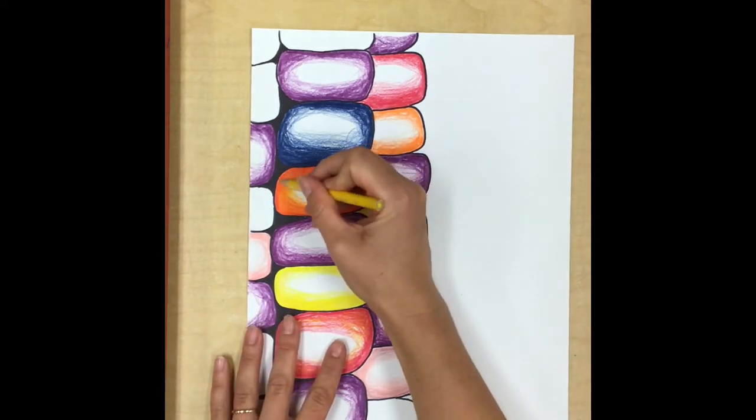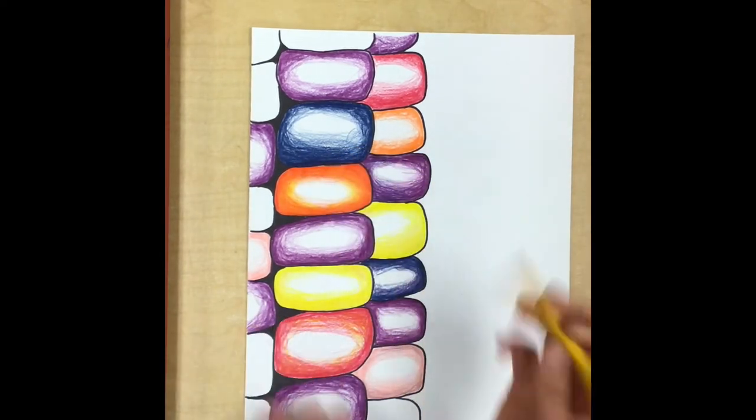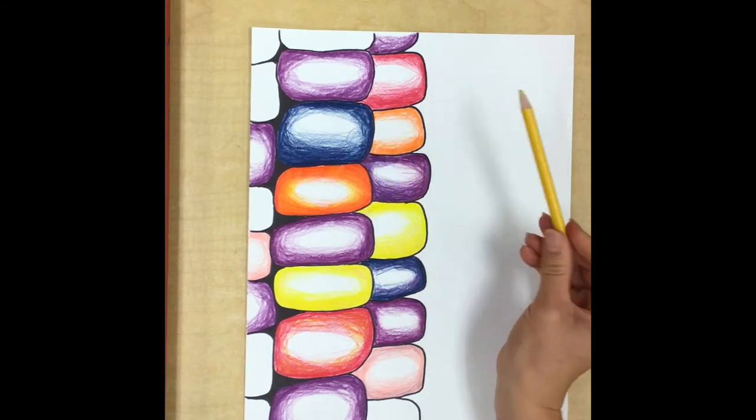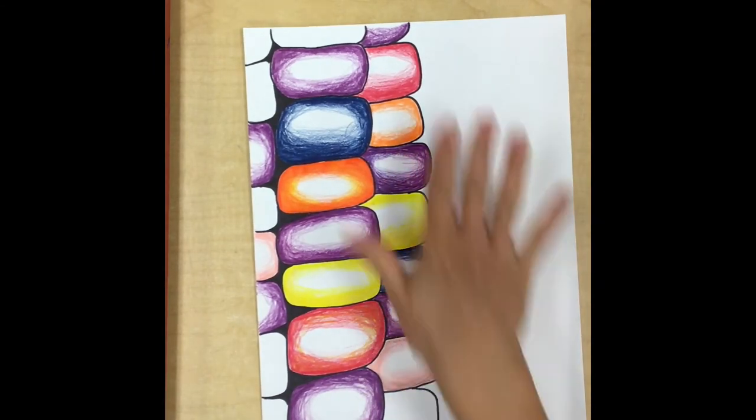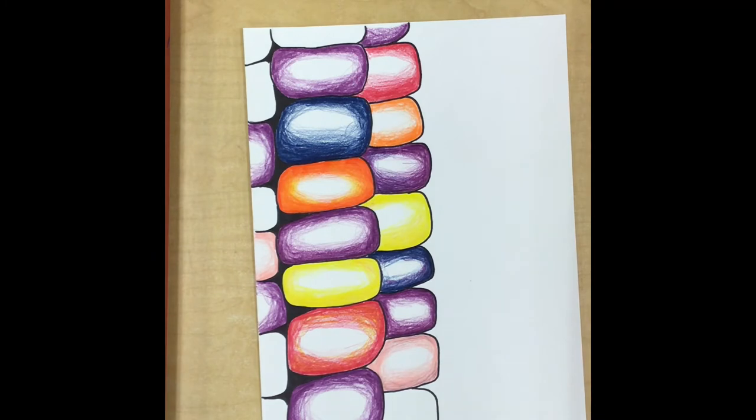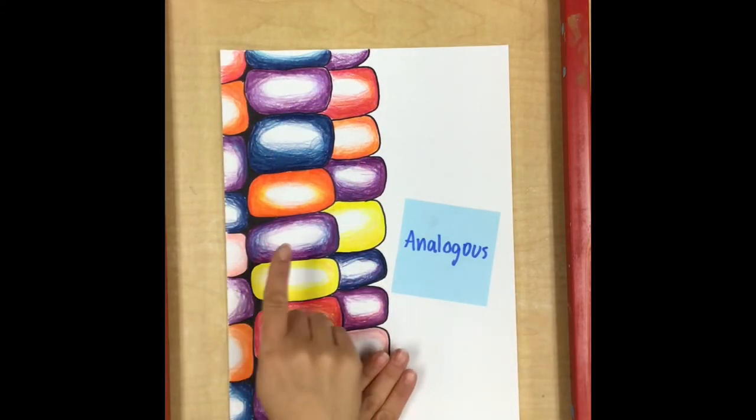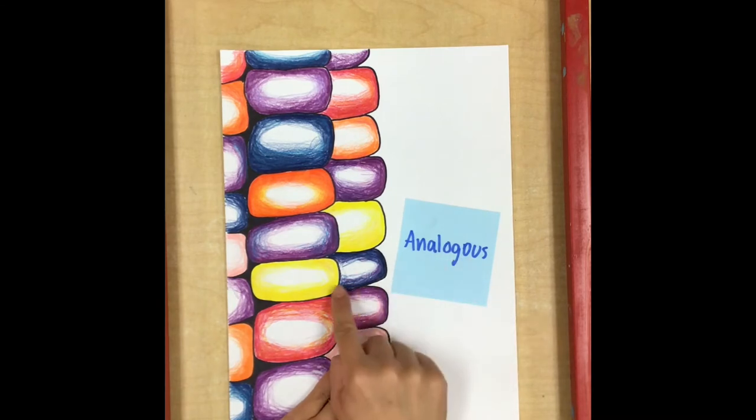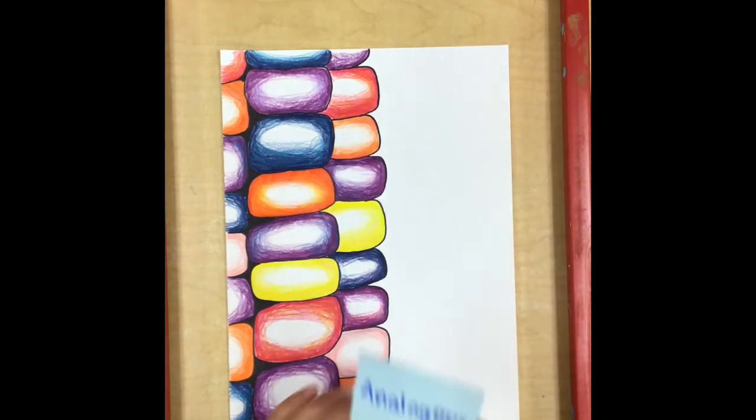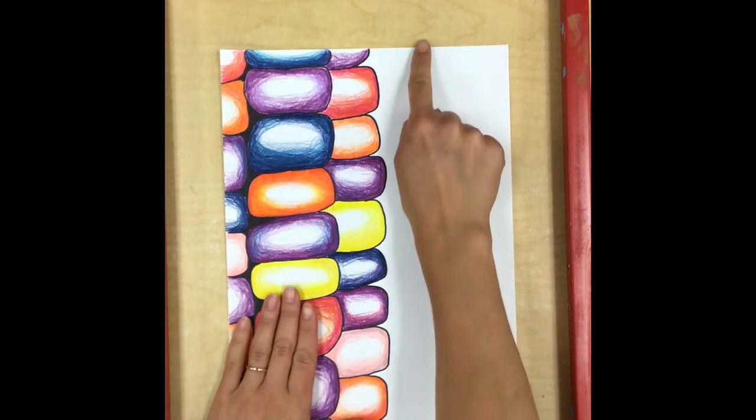So I'm just going to keep on going, doing my value shading and adding surprise colors until all of my corn is colored in. Once we've finished coloring each kernel and adding an analogous color to each kernel, we are going to start working on the husk of the corn.